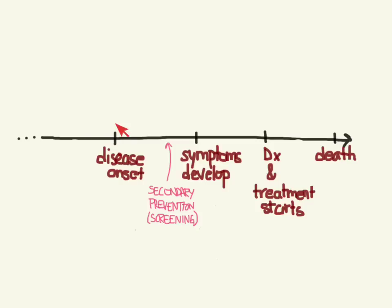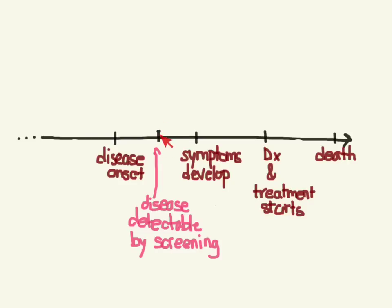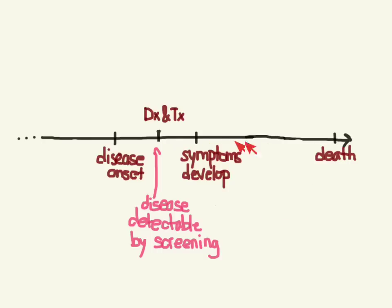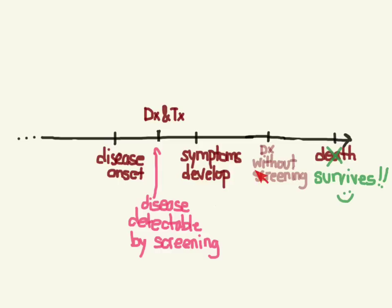So when a disease first starts, it might not be detectable, but at some point there's probably a place where a test can detect it. So on this timeline, this is the point at which a test can detect it. The goal is if we detect it here, we move diagnosis and treatment to earlier. So now we have all this extra time in which to treat the patient and hopefully improve the outcome. This time that we saved — being able to diagnose it earlier — we call this the lead time.